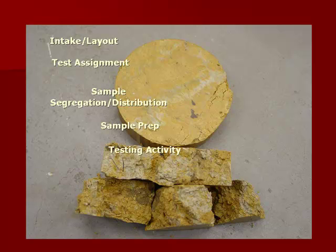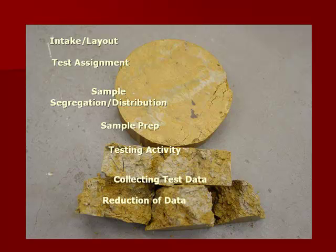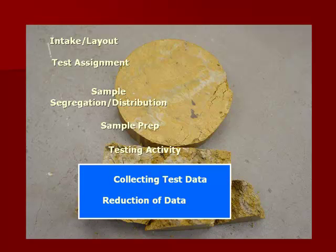The lab then does sample preparation and the testing activity — actually cutting the samples, weighing them, putting them in the oven, drying them out, bringing them back out and weighing them again. Then comes reduction of data. All of these activities culminate eventually in getting the information to the engineers. What I'd like to concentrate on now are the production processes associated with collecting the test data and the reduction of that data.